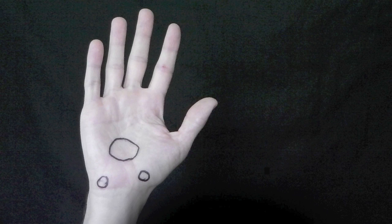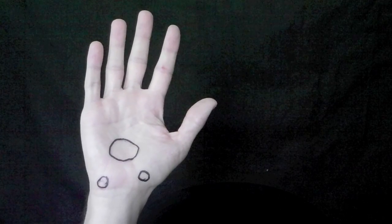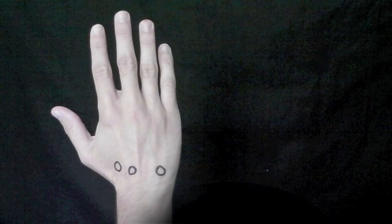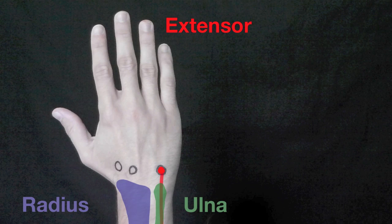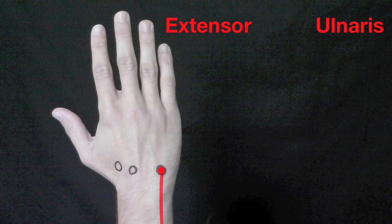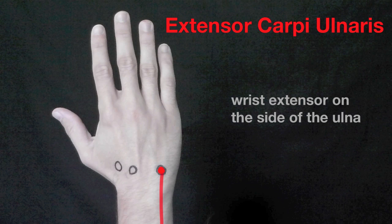The middle muscle here doesn't follow this naming convention, so let's skip it for now. Here we are on the back of the wrist, so we know that all these muscles are extensors. This muscle follows the same naming convention as the others. It's on the back of the wrist so it's an extensor, and it's on the side of the ulna so we add ulnaris. This is the extensor carpi ulnaris, which means wrist extensor on the side of the ulna.